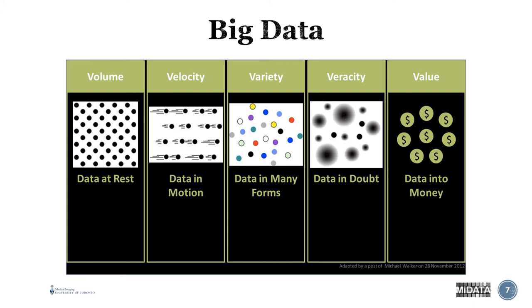Variety is the different forms and types of data you're working with — not necessarily the different variables, but the different types of data. Are you collecting survey information, measurements, social media type information? All of those are different varieties of data that need to come together to tell the story. The more different forms of data you're collecting contributes to the variety, which if you have many, many different types, would be considered big data.